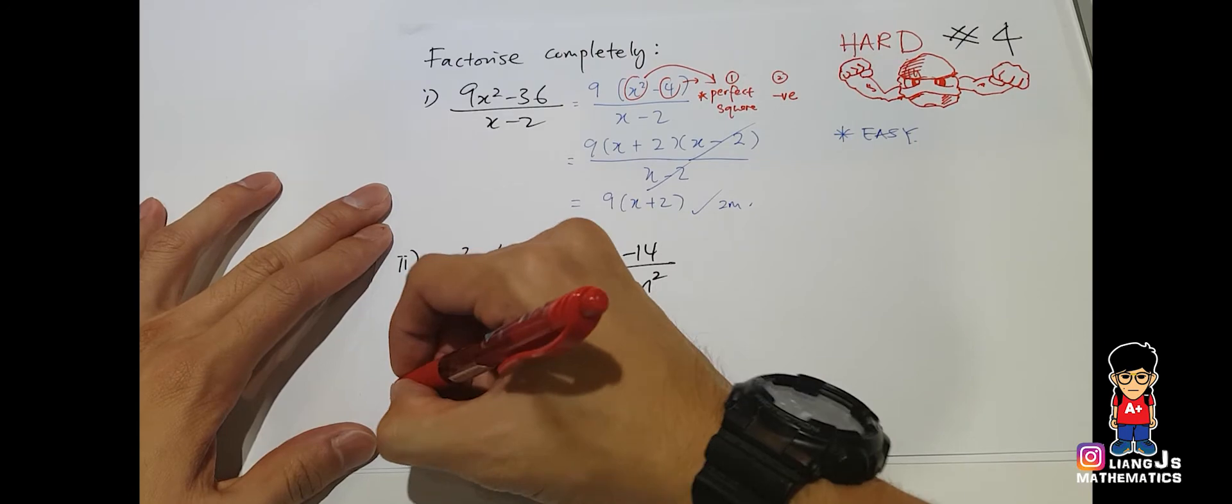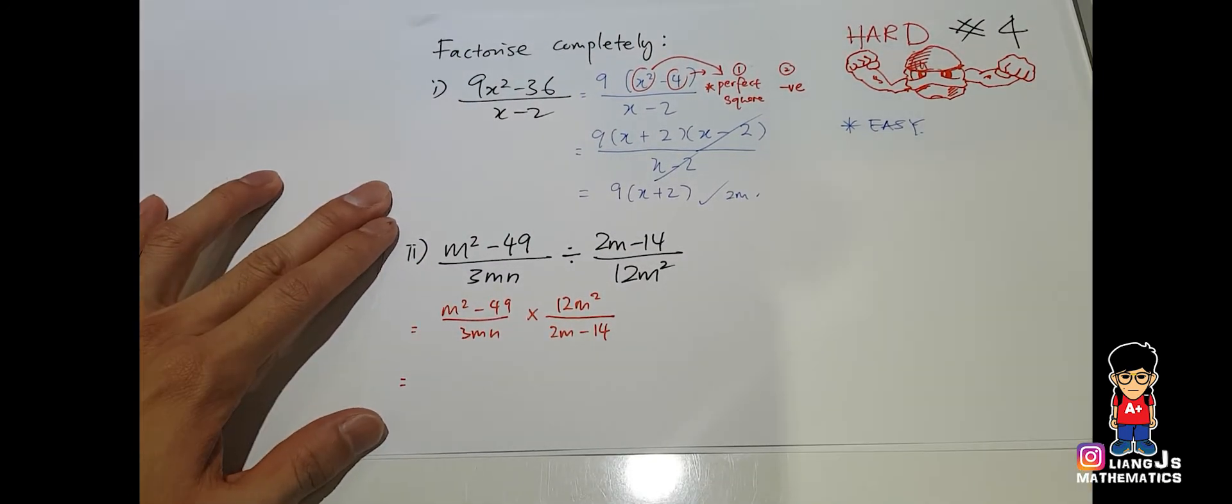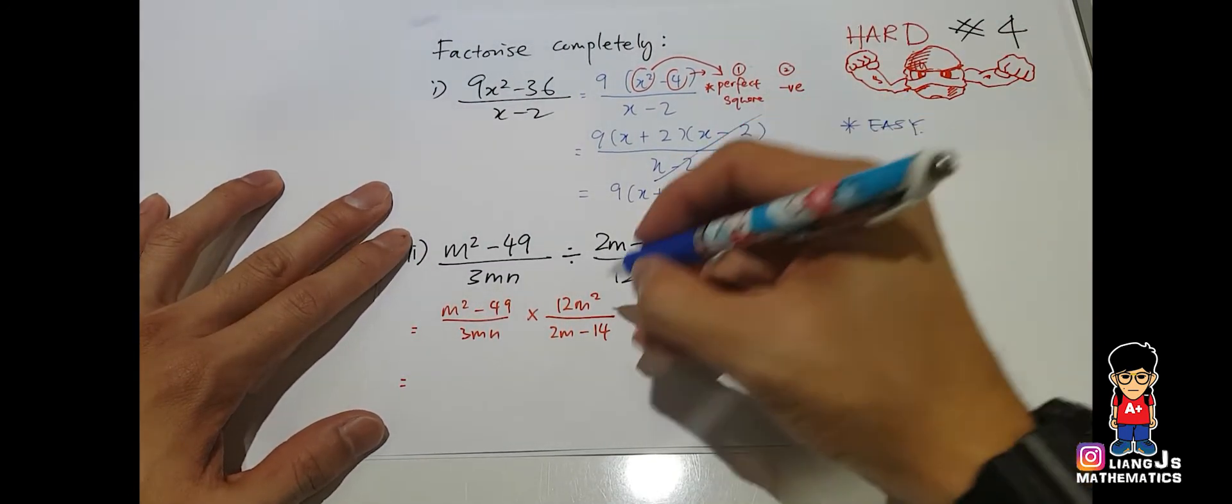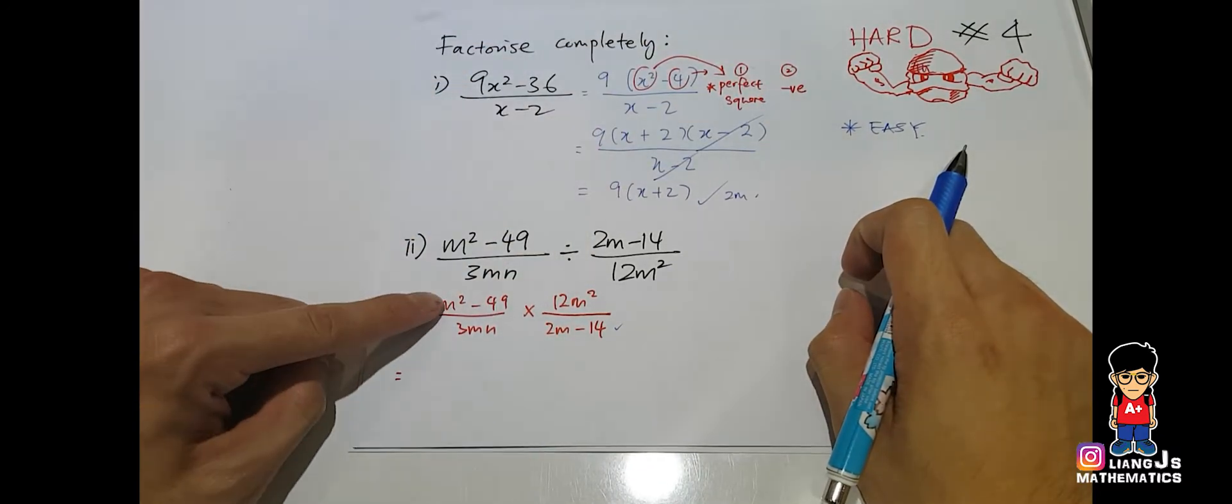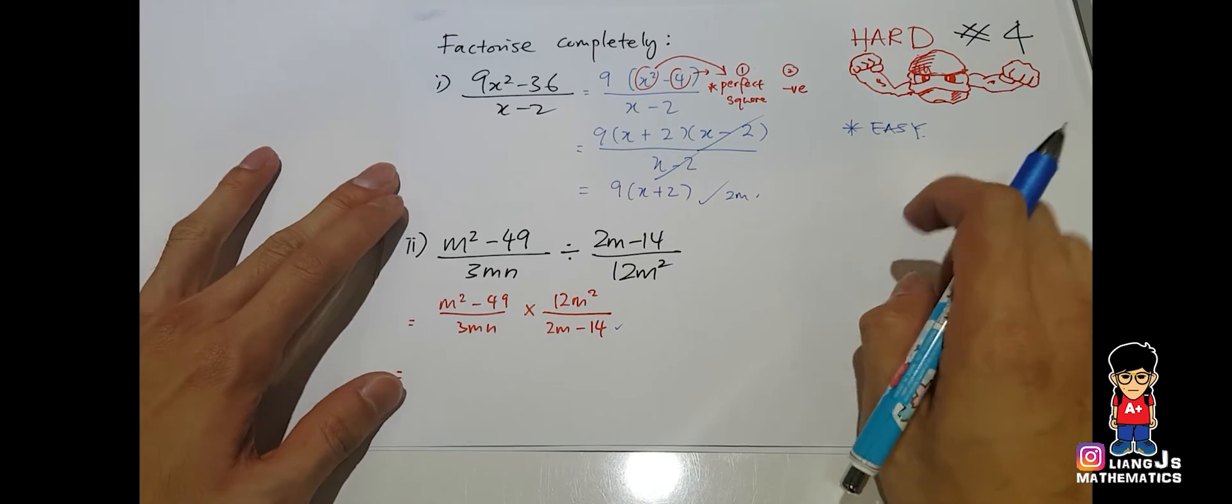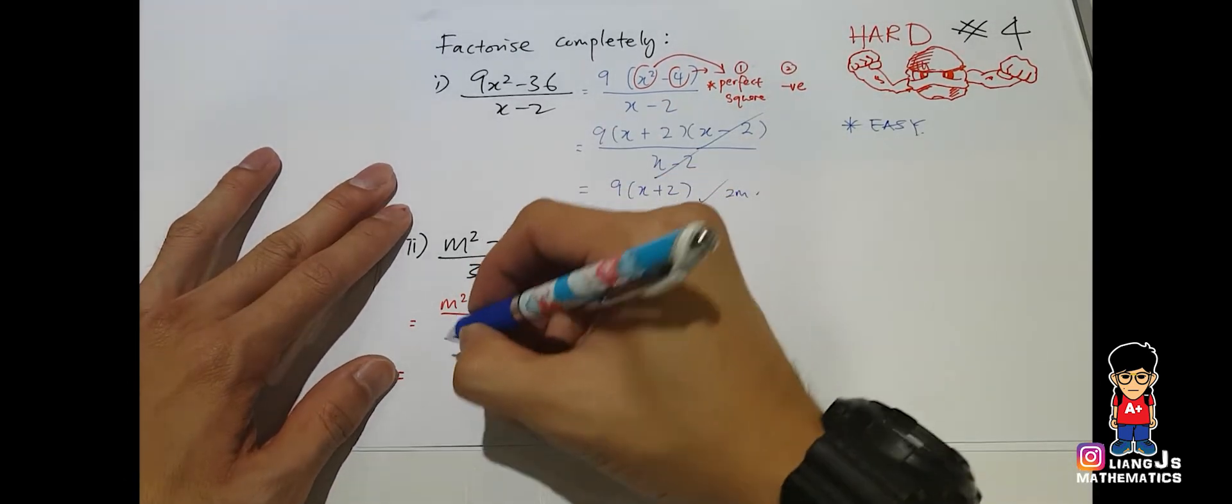And let's apply all the easy factorize, moderate and height. Of course, easy factorize, the only part where you can use is here. And the perfect square negative version one, yes, is here. Moderate don't have, because it must be 4 terms.